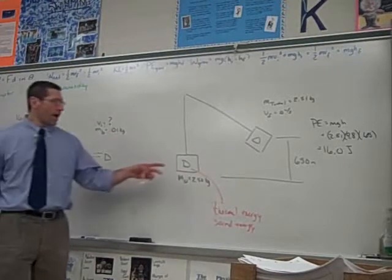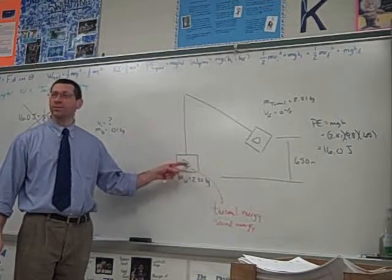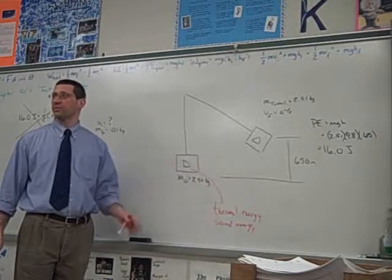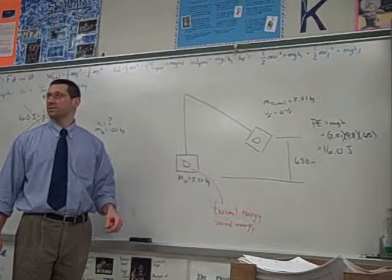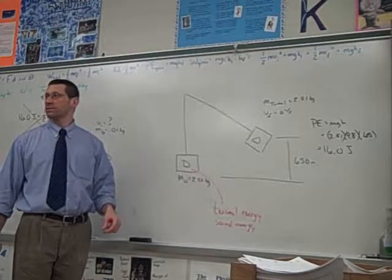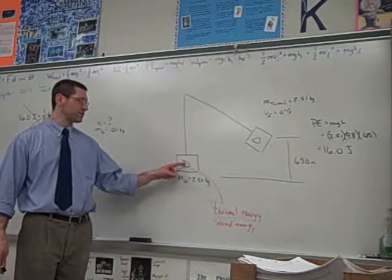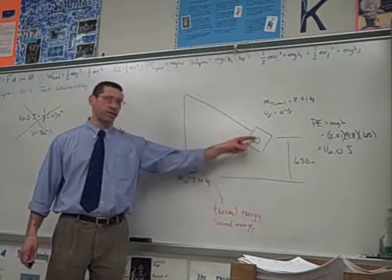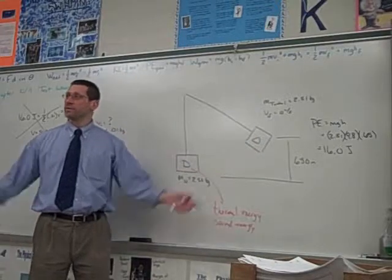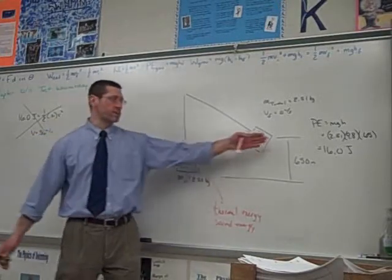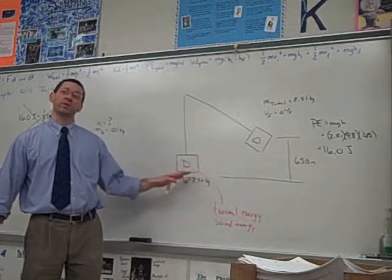All right, now, how much kinetic energy did the block and the bullet have when they first started to move after the collision? How much kinetic energy was here that allowed it to go to there? Sixteen joules. Sixteen joules, right? Because that's how much potential it had. So, that must be the amount of kinetic it had.